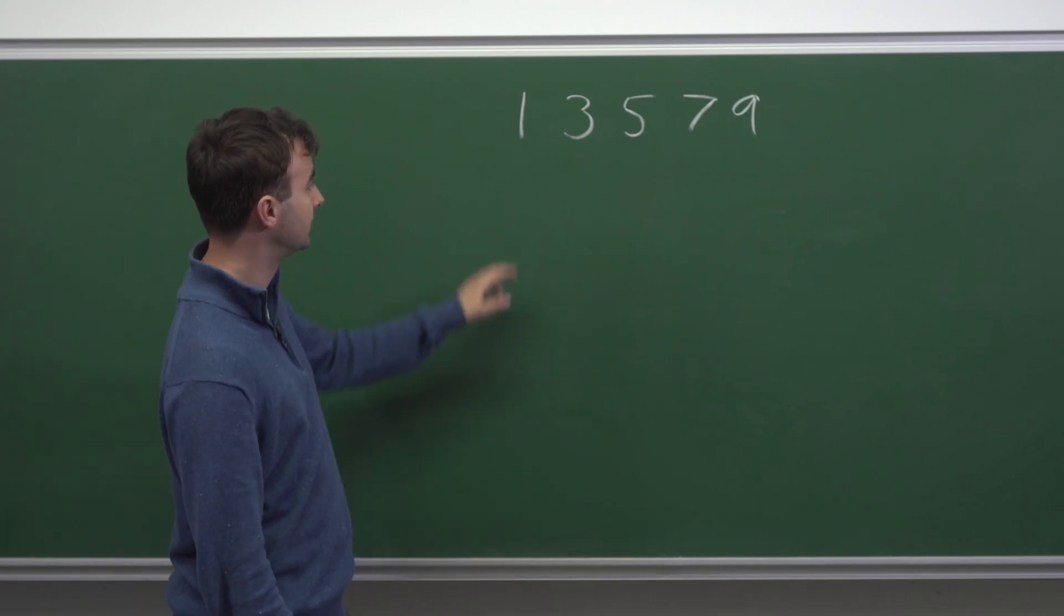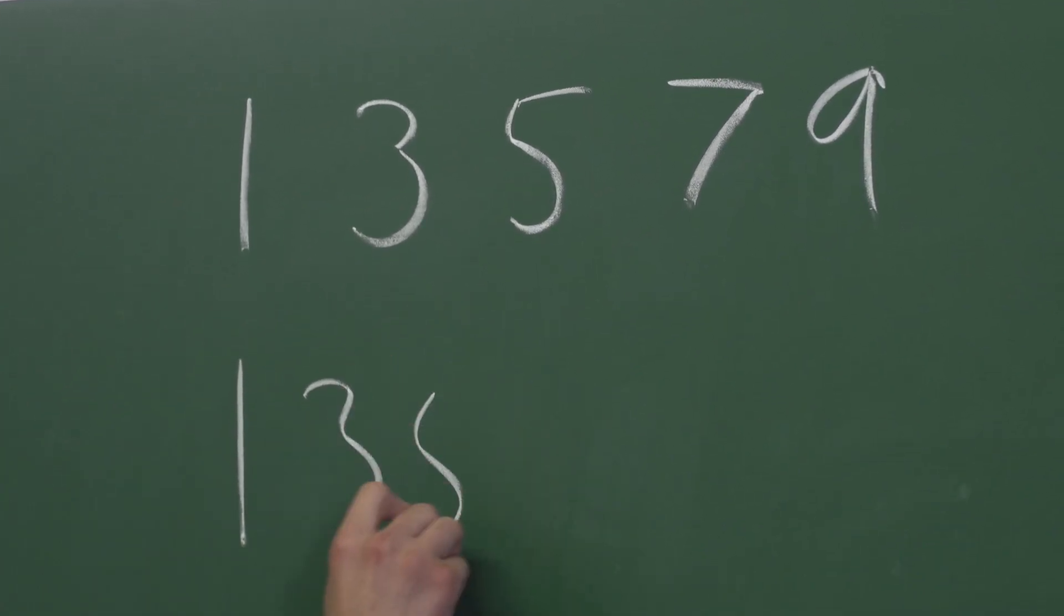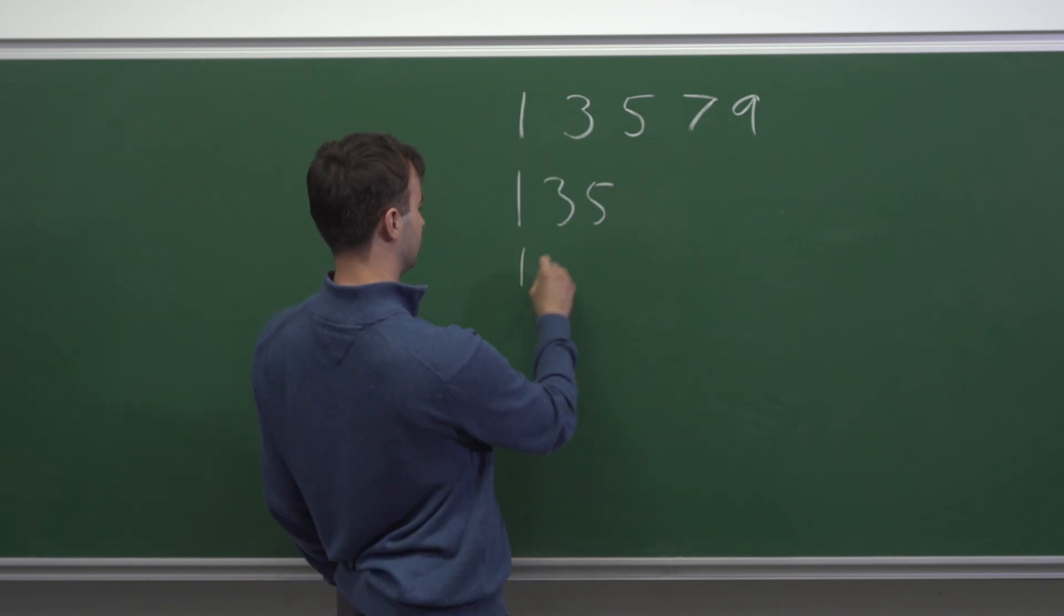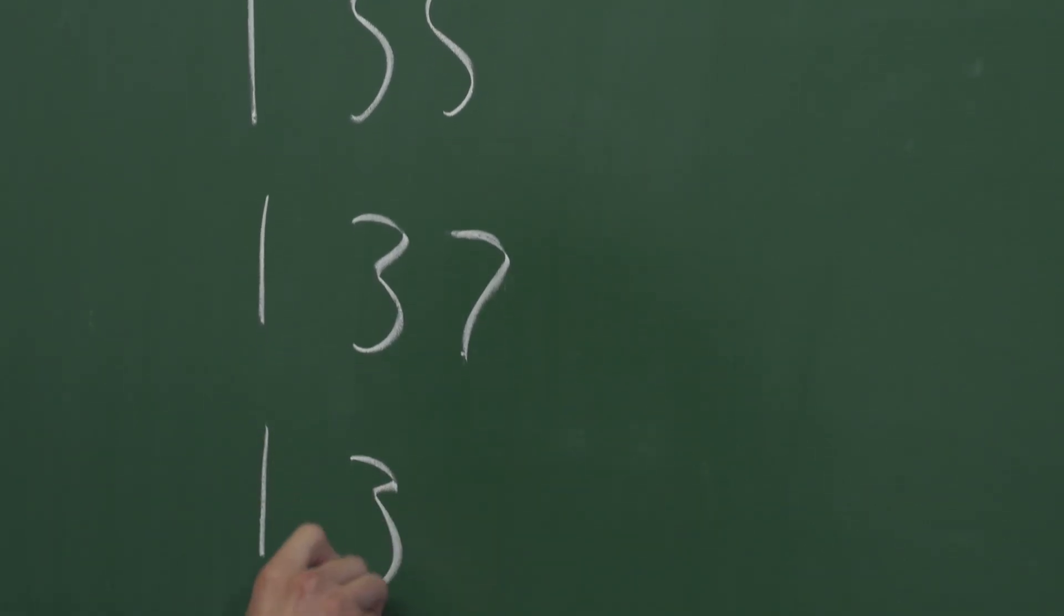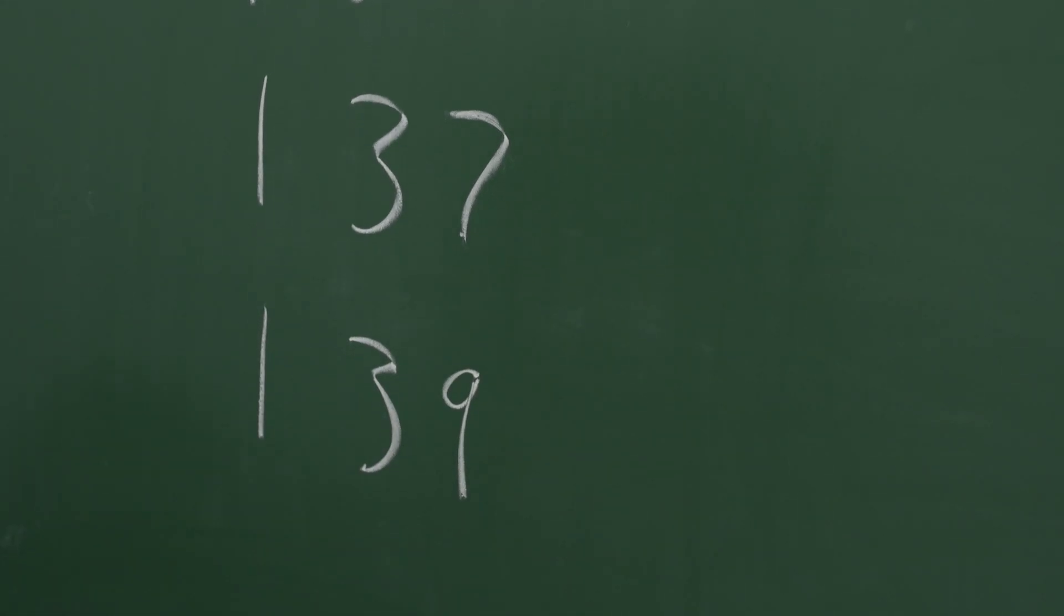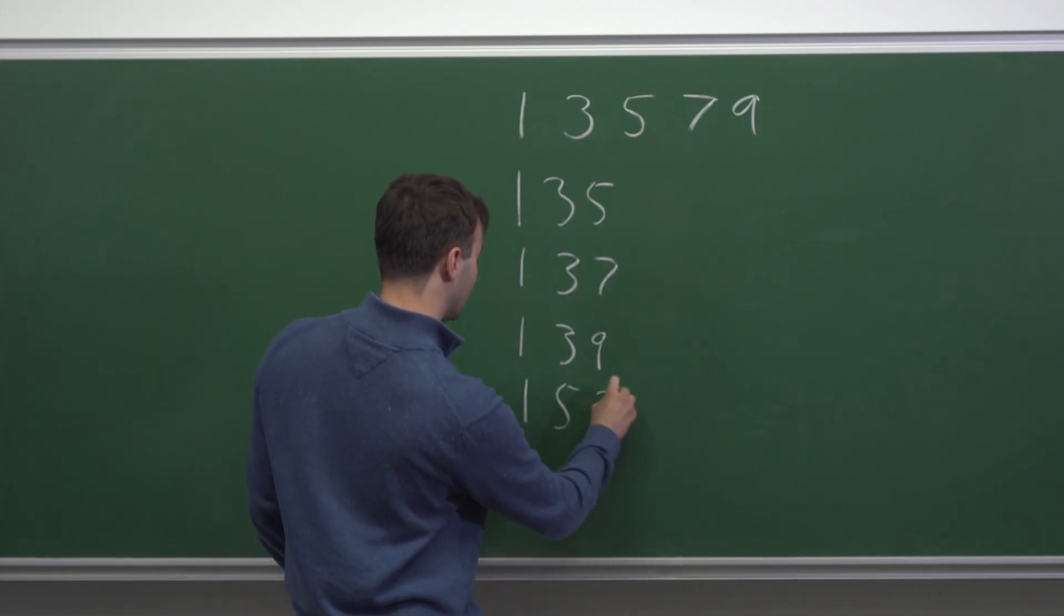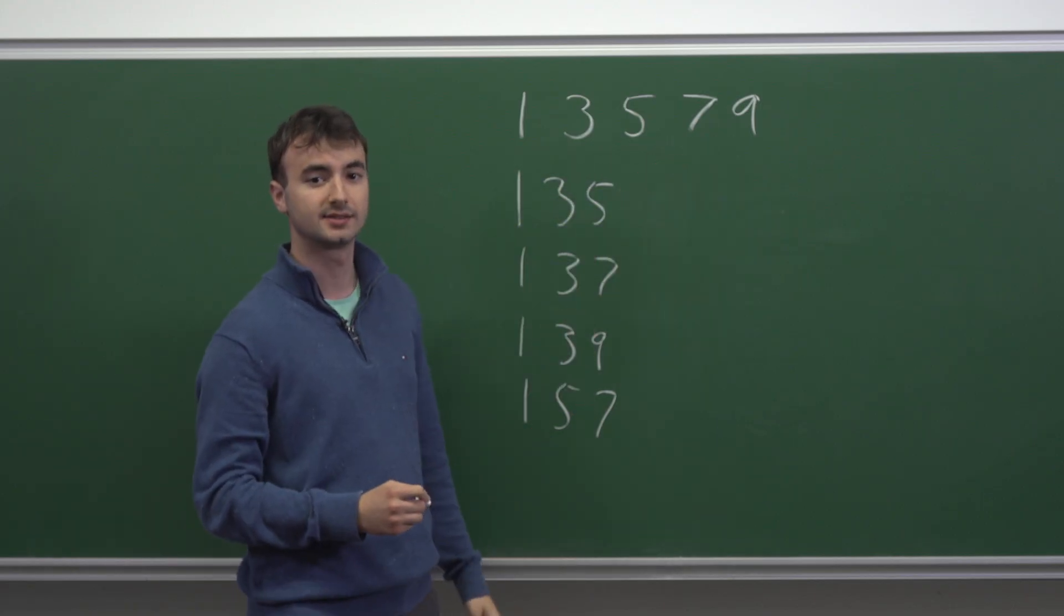So our number could have the digits one, three and five. Or it could have one, three and seven. Or it could have one, three and nine. And then we can move on to one, five and seven. And in this way, we can systematically list out all of the sets of three different odd digits that our number has.